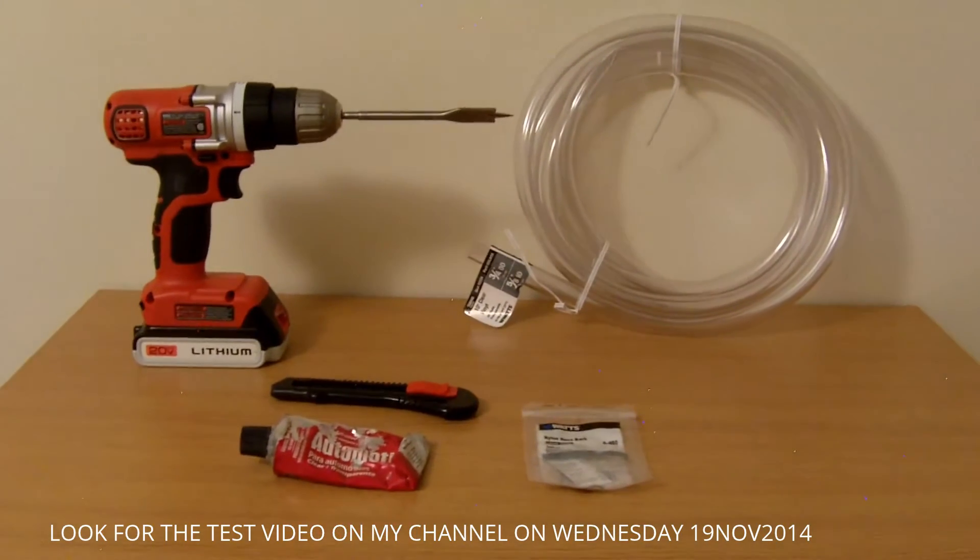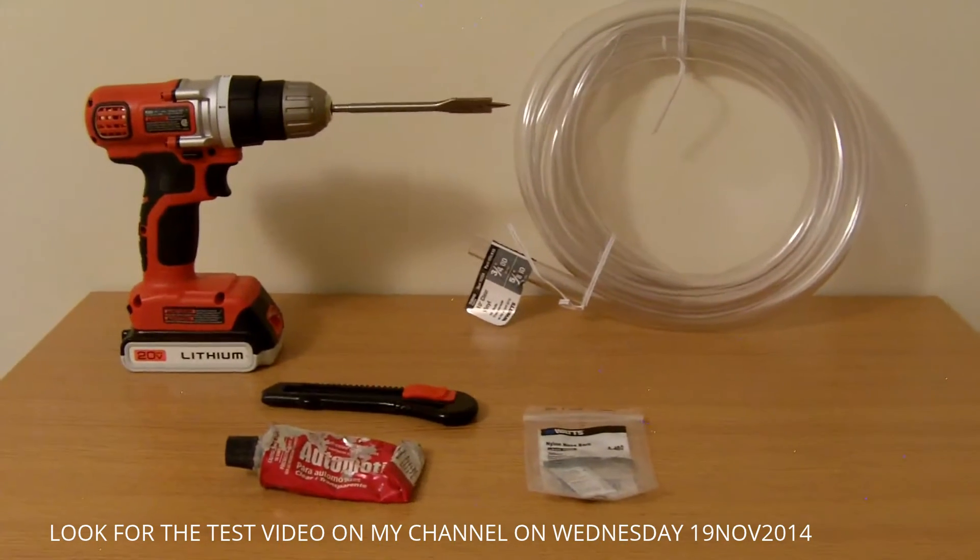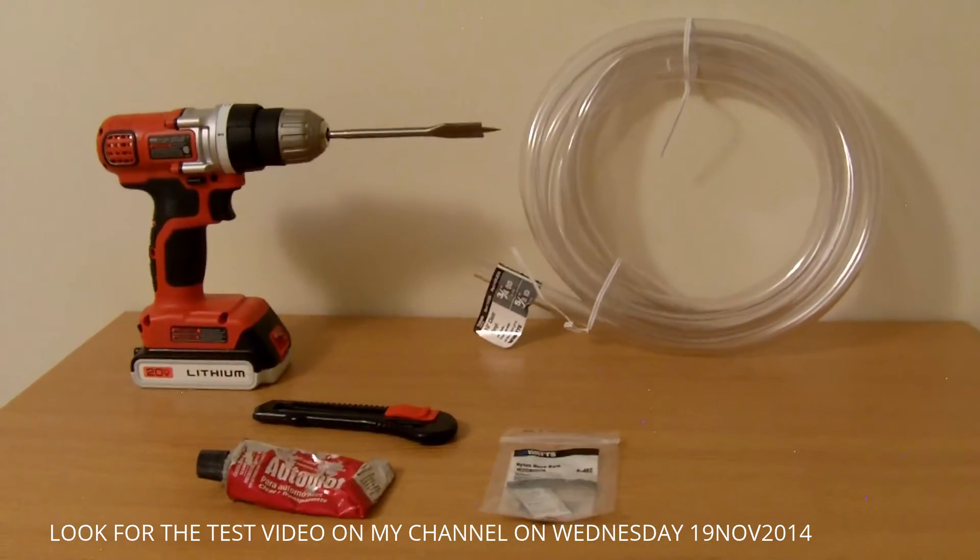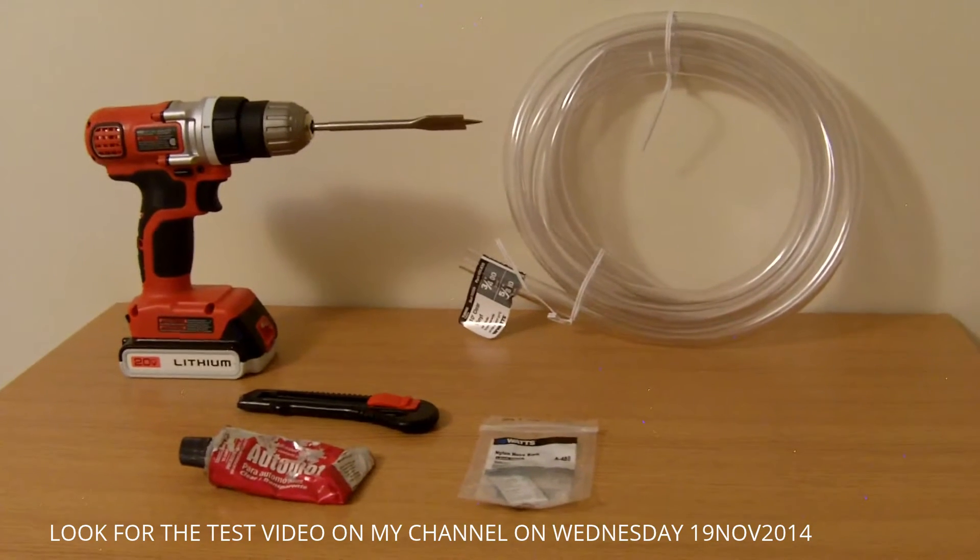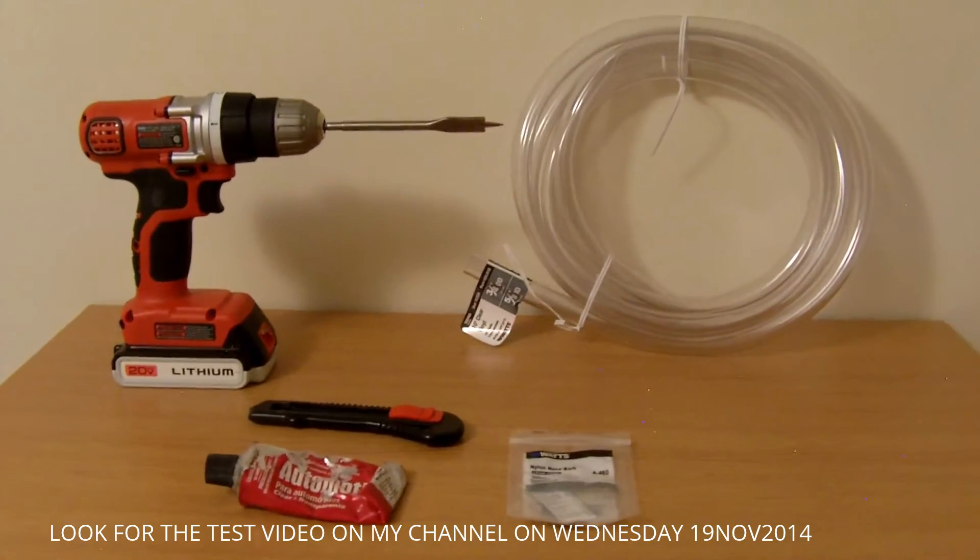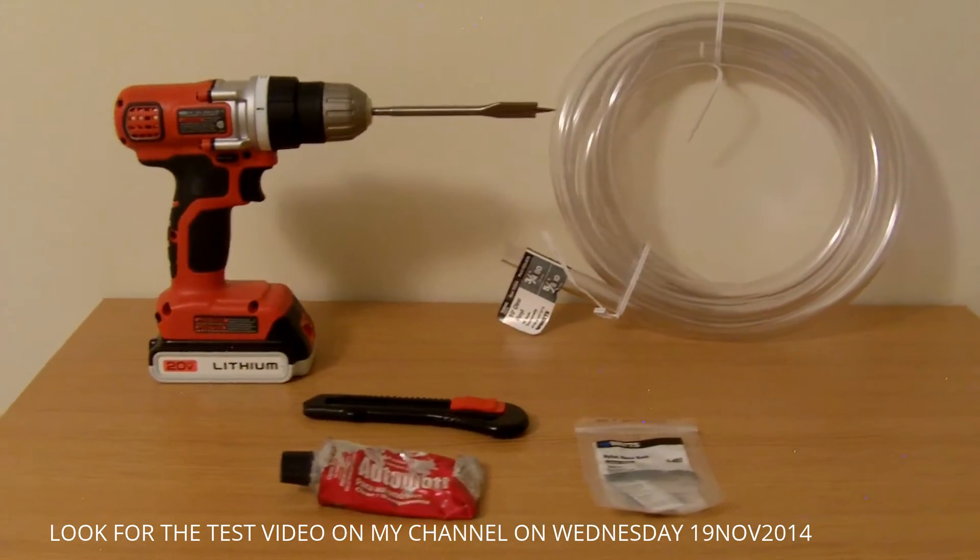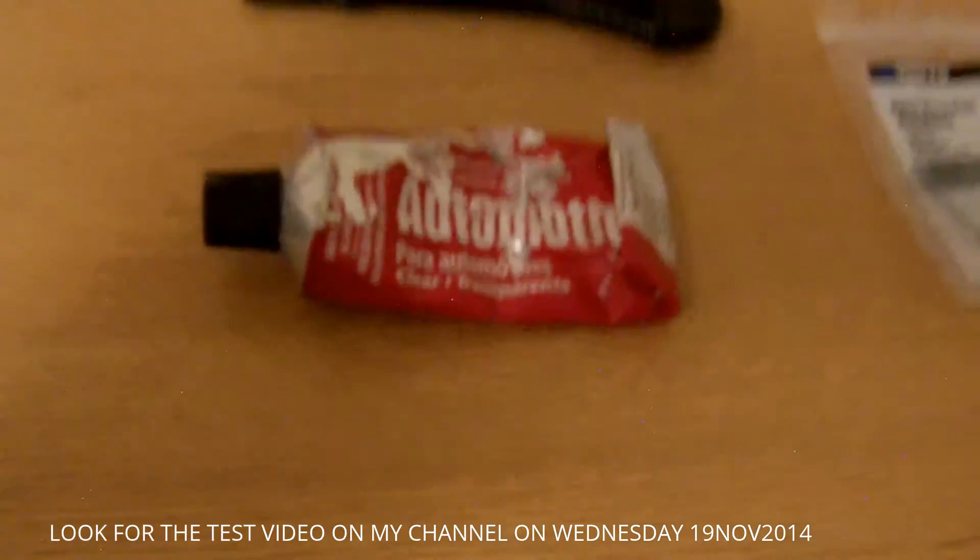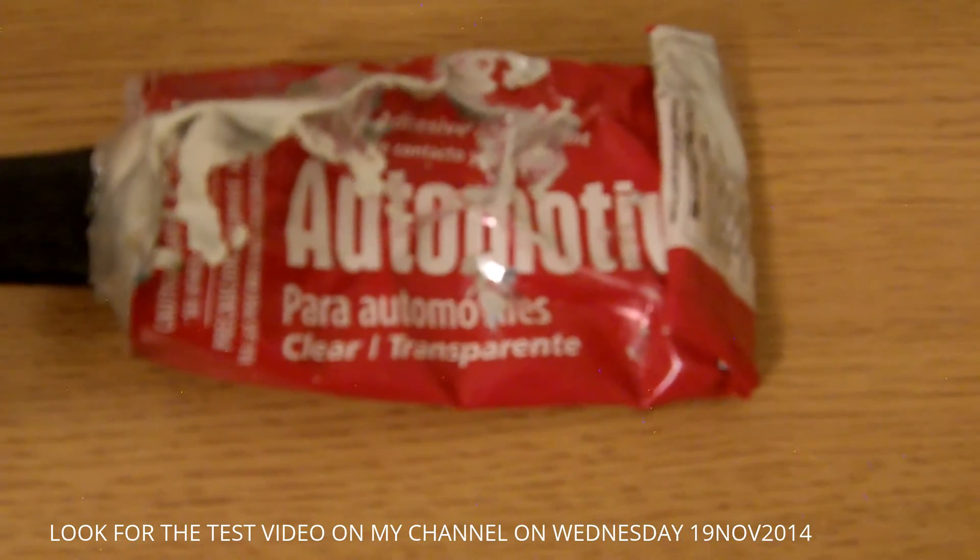Here are some of the items and tools that I've actually used. It's a really simple thing to put together. The longest part of it is actually running out to the store and getting everything and the time that the glue takes to set. For the glue I used what's called automotive goop.